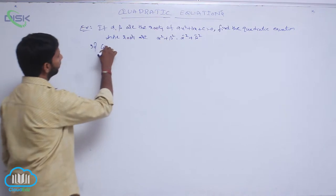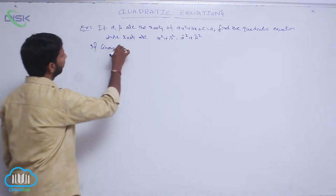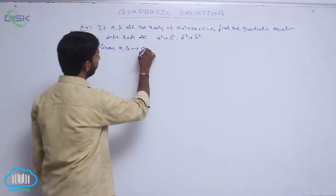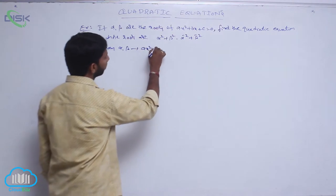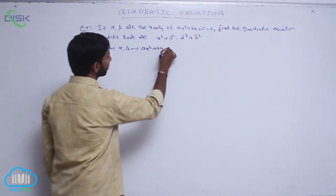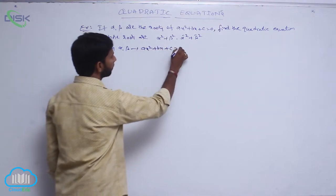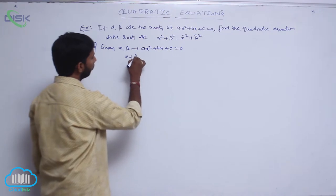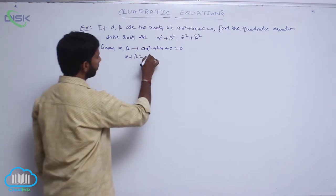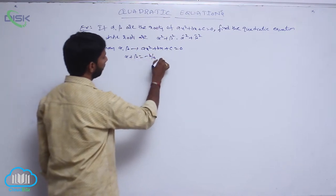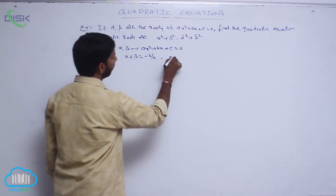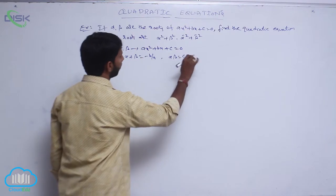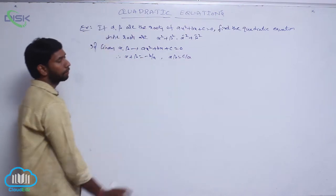Given that α and β are the roots of ax² + bx + c = 0. Therefore, α + β = -b/a and the product of roots αβ = c/a.